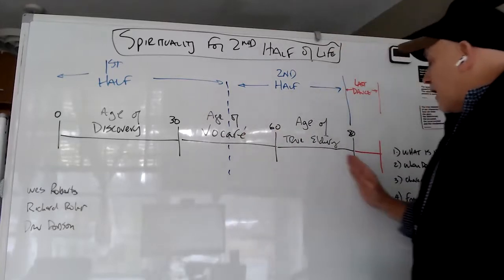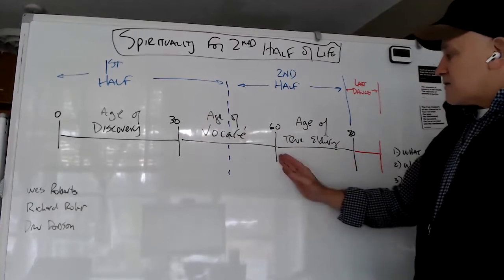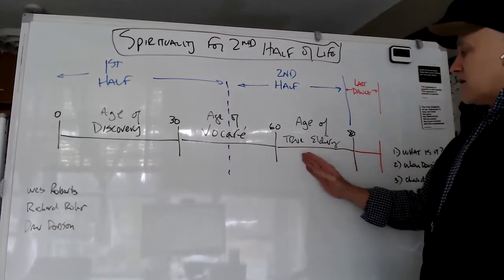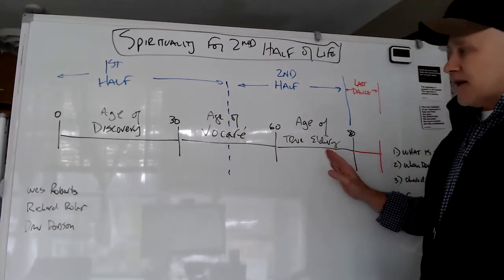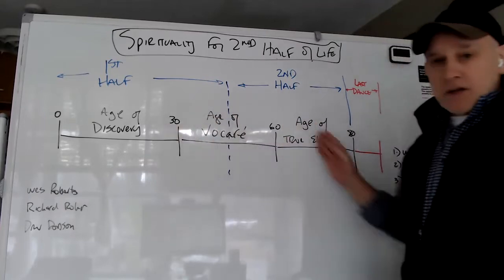And then the third phase is I'll call the phase of true eldering, the age of becoming a true elder. And I'll explain that as we go. And with that as an initial framework, this is where the first half and the second half come up.